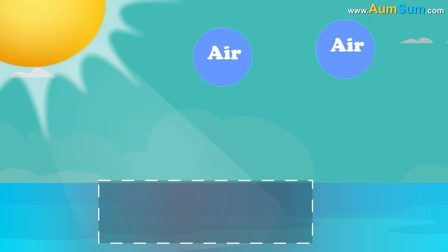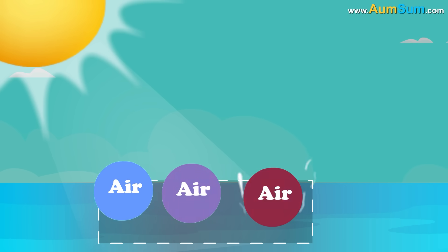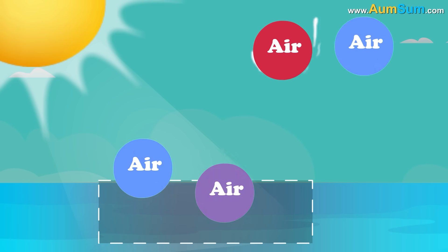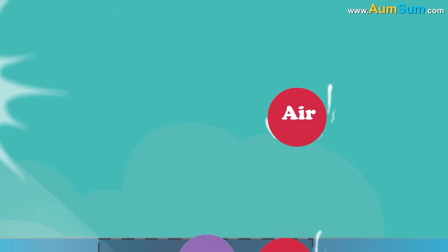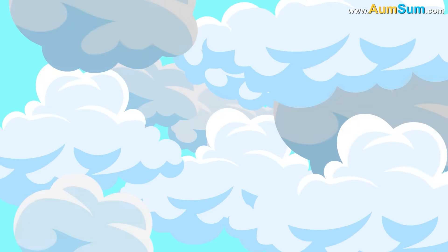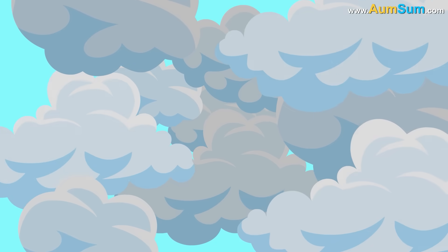Air from surrounding areas pushes into this low pressure area. This air also becomes warm and moist and rises. This cycle keeps on continuing. Now, as the warm, moist air keeps on rising, it cools off and forms clouds. Even big, stormy cumulonimbus clouds are formed.